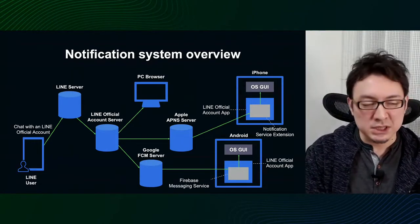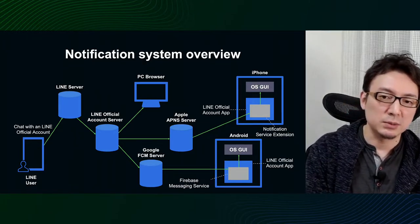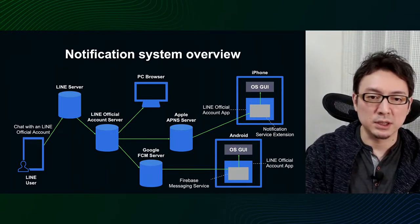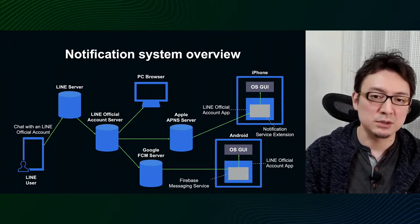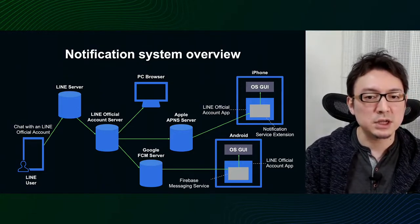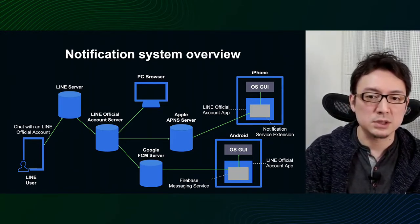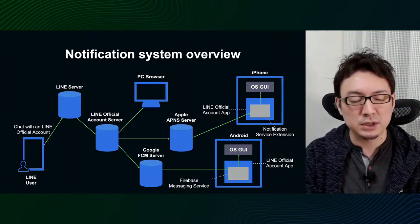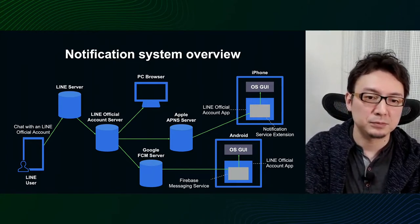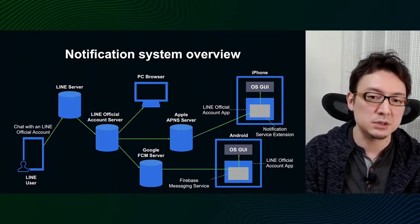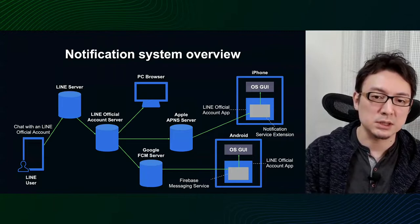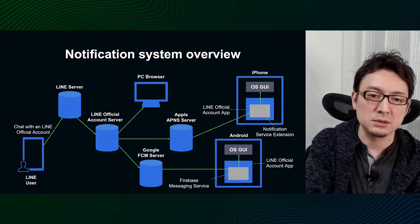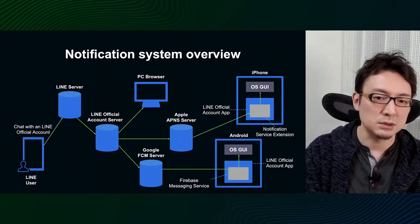You may think that the LINE Official Account notification system may be doing something special. The far left is the LINE application user. When she talks to the official account, a notification will be sent from the LINE servers through the official account server to the apps. If it's iOS, it goes through APNS. If it's Android, it goes through the FCM server to deliver notifications. This is a very common configuration. As a special note, iOS uses notification service extension, and Android's FCM uses data message, not notification message. JSON is sent from the server and the Firebase Messaging Service in the app parses the JSON and extracts the notification string.